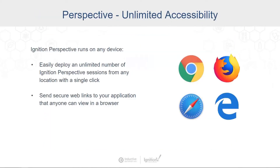Perspective runs on any device. You can easily deploy an unlimited number of Ignition Perspective sessions from any location with a single click. The licensing model for Ignition is unlimited, and that goes for everything. It's easier than ever to get a Perspective session open — simply open your browser, point it to the URL of your server, and you have the application available. You can even send secure web links that anyone can click to get access in their browser.